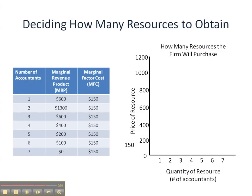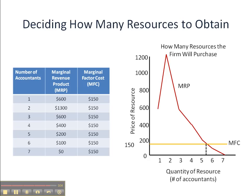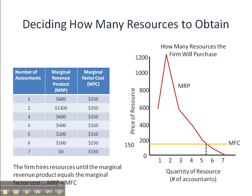Now we're going to put it all together. We go back to our schedule and graph our marginal revenue product from the previous video, then put in our marginal factor cost — the cost associated with an additional unit of input. We see that the marginal factor cost curve intersects the marginal revenue product curve at about five and a half. That means the firm should employ the fifth unit of input — the fifth accountant in this case — but not the sixth. Our rule: the firm hires resources until the marginal revenue product equals the marginal factor cost. That's how firms decide how many units of input to obtain.